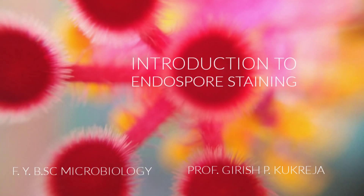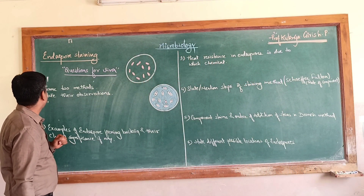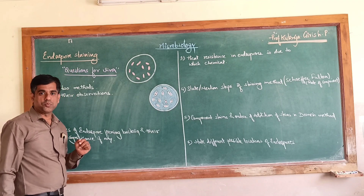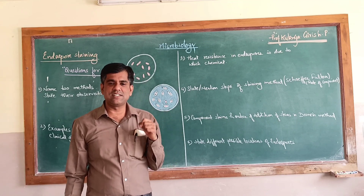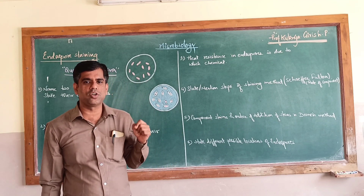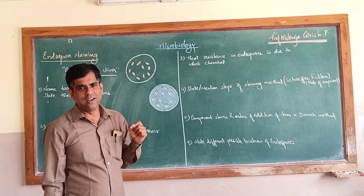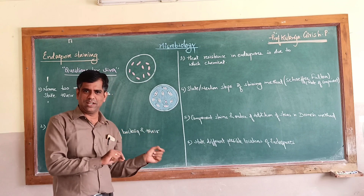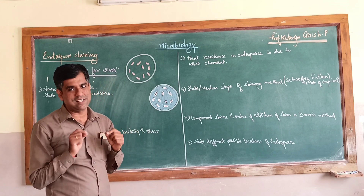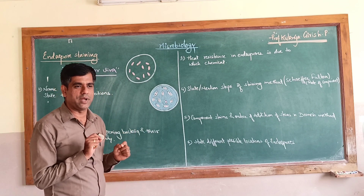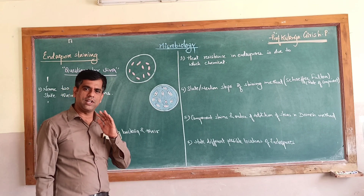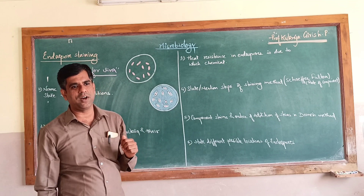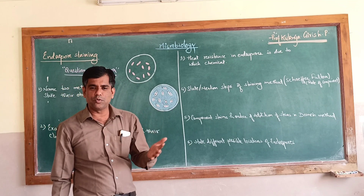Hi friends, we are back with our questions for viva. Today we have the practical on endospore staining — a heat resistant, dormant structure of bacteria that is very difficult to stain and therefore very difficult to de-stain. That is the basic principle behind this endospore staining. This series contains only simple questions asked in viva.